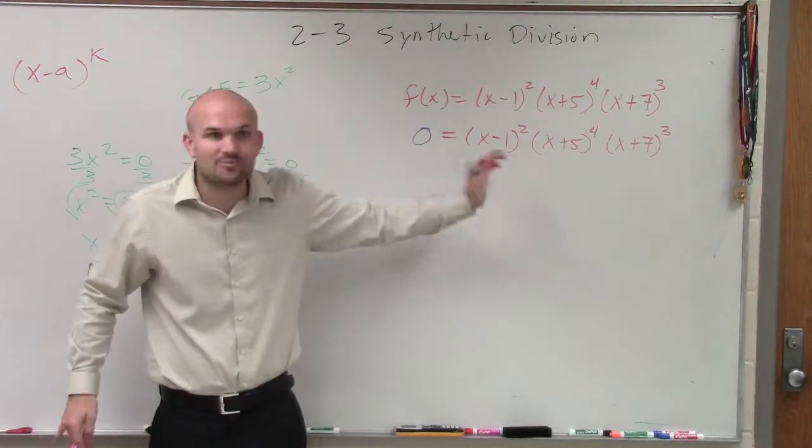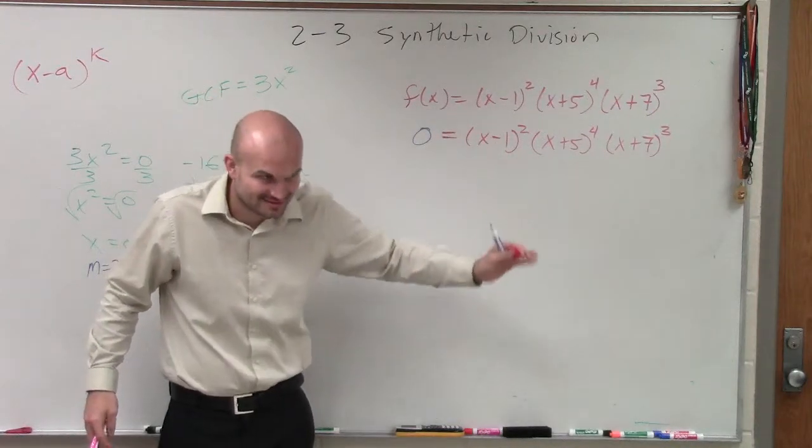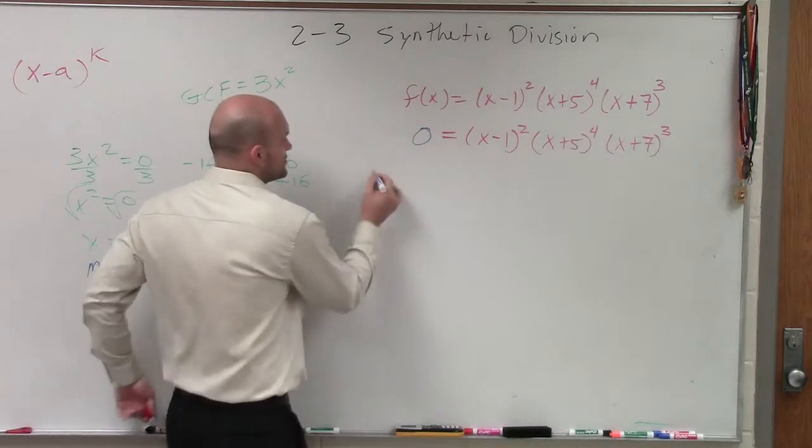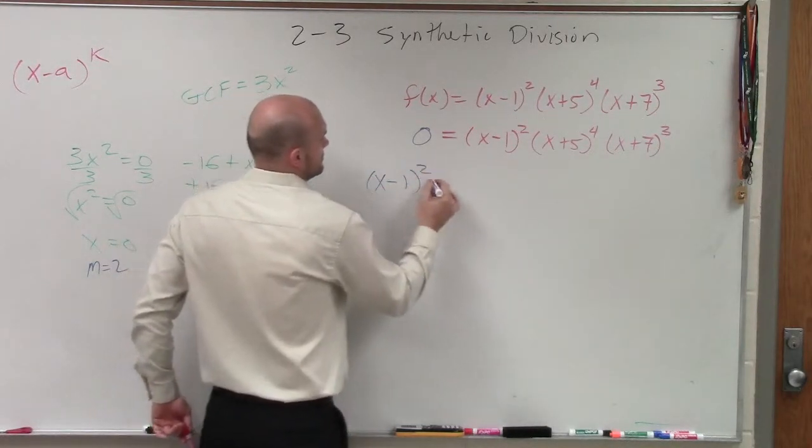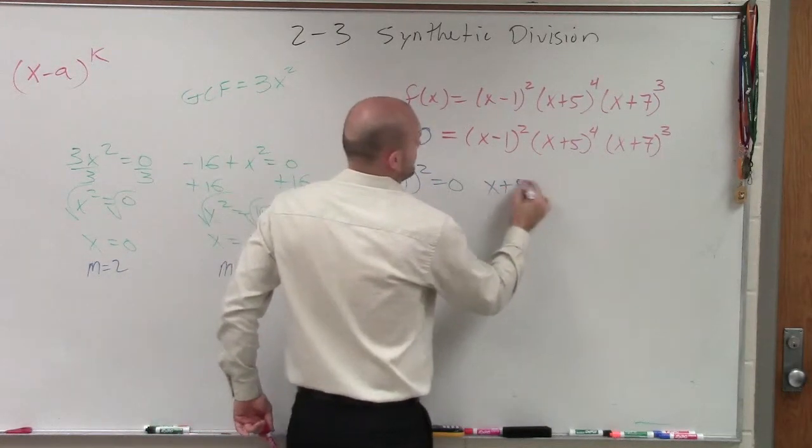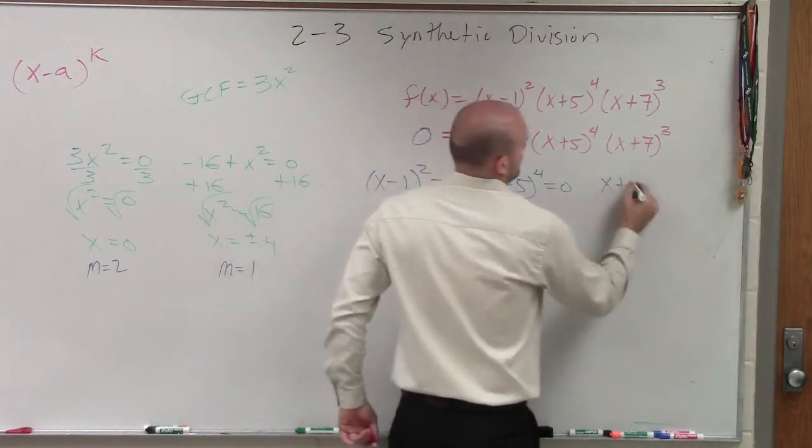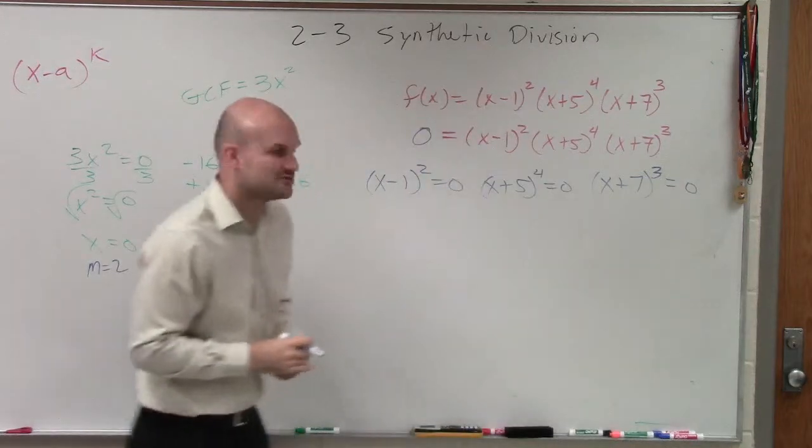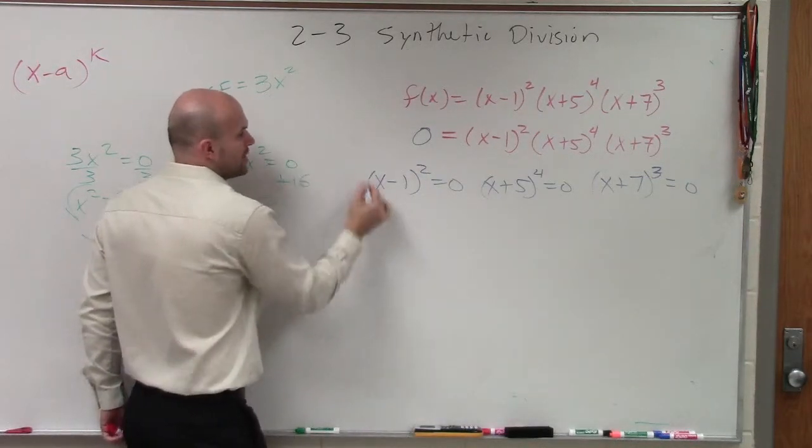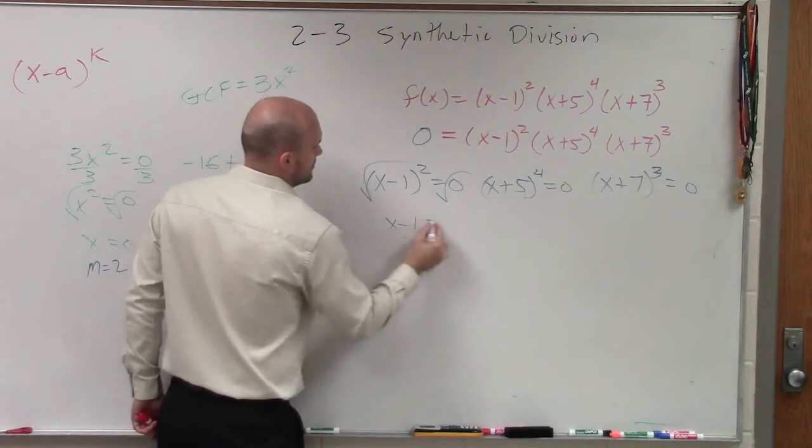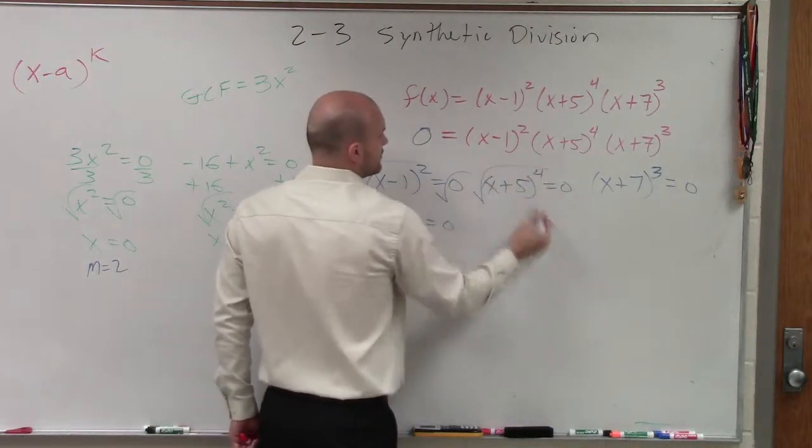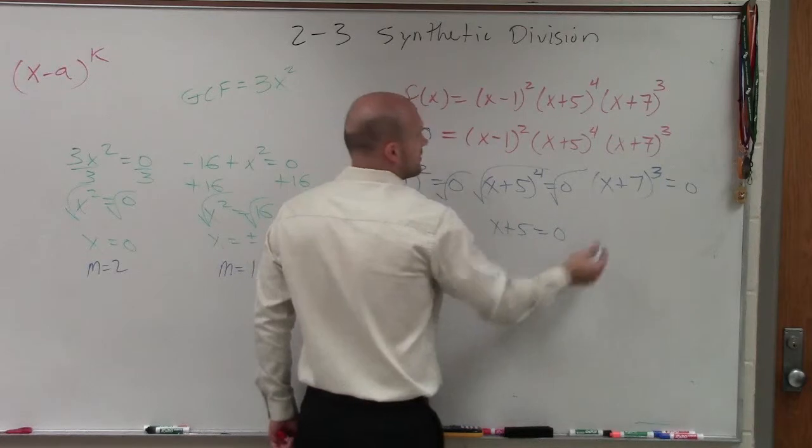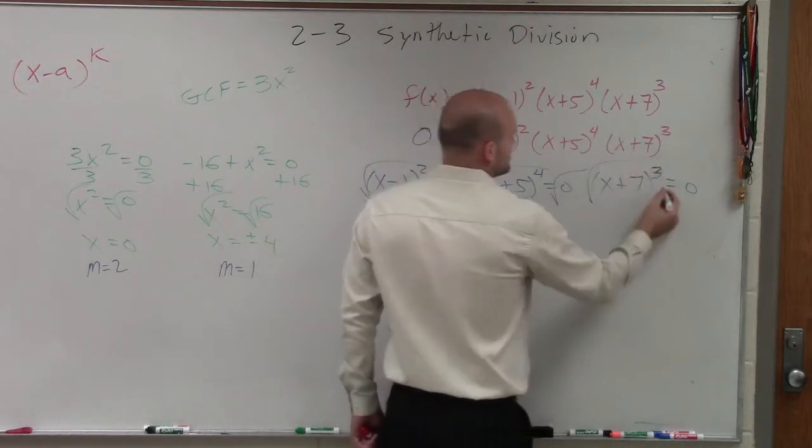To find my zeros, I can apply the zero product property. So now I can set each one of these equal to zero and solve. Under the square, square root. Under the two-fourth power, fourth root. Under the raised to the third power, take the cube root.